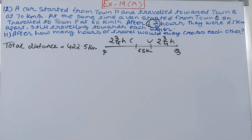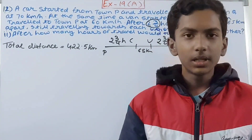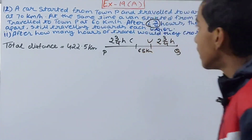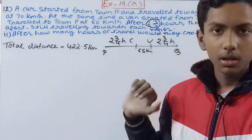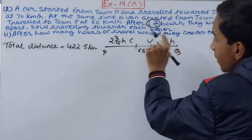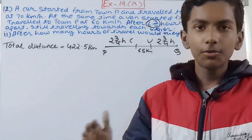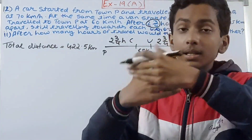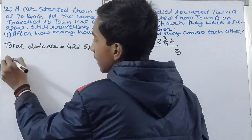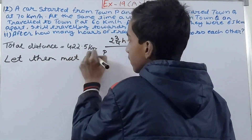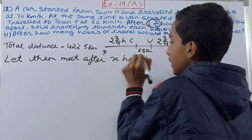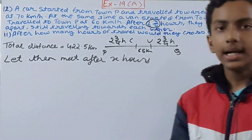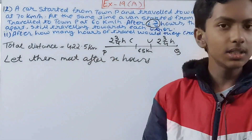For the next part: after how many hours of travel would they cross each other? At this point they are 65 kilometers apart. The car's speed is 70 km/h and the van's speed is 60 km/h. We need to find the time they take to cross each other. Let's assume they meet after x hours.